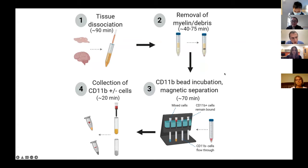Here is the graphical abstract as a rough outline for the protocol. It's quite a simple workflow: we start by dissociating our tissues to the single cell level, we remove debris and myelin depending upon our downstream workflow, and then we use magnetic beads and columns to enrich for our labeled cells, which we then collect for downstream usages.